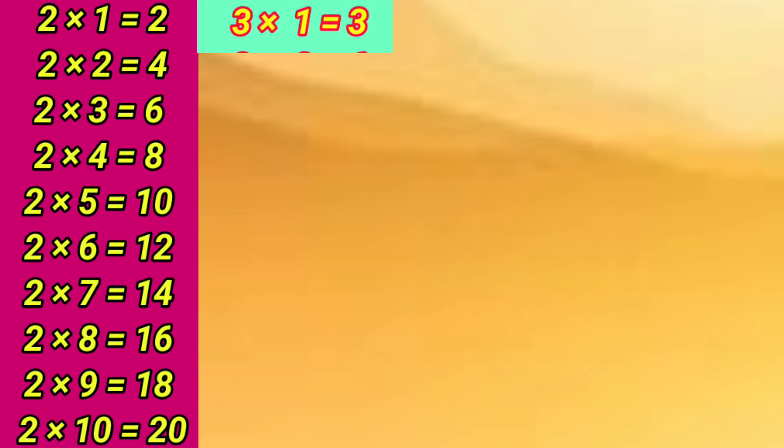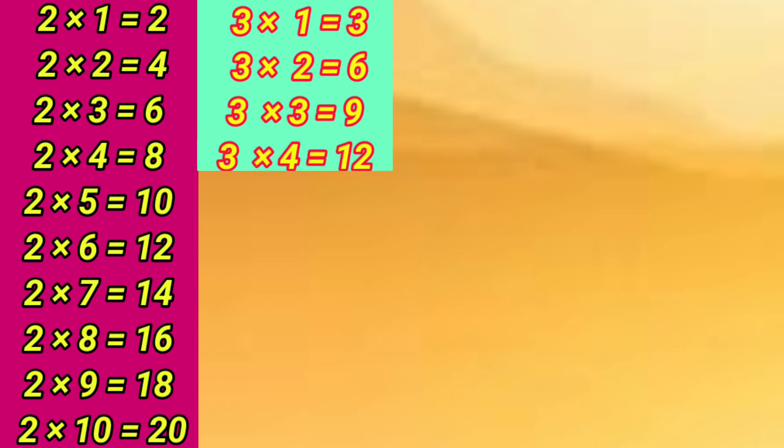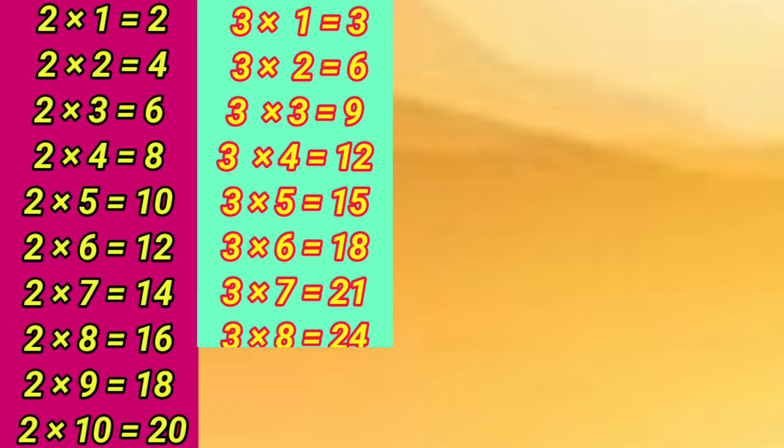2×1=2, 2×2=4, 2×3=6, 2×4=8, 2×5=10, 2×6=12, 2×7=14, 2×8=16, 2×9=18, 2×10=20. 3×1=3, 3×2=6, 3×3=9, 3×4=12, 3×5=15, 3×6=18, 3×7=21, 3×8=24, 3×9=27.